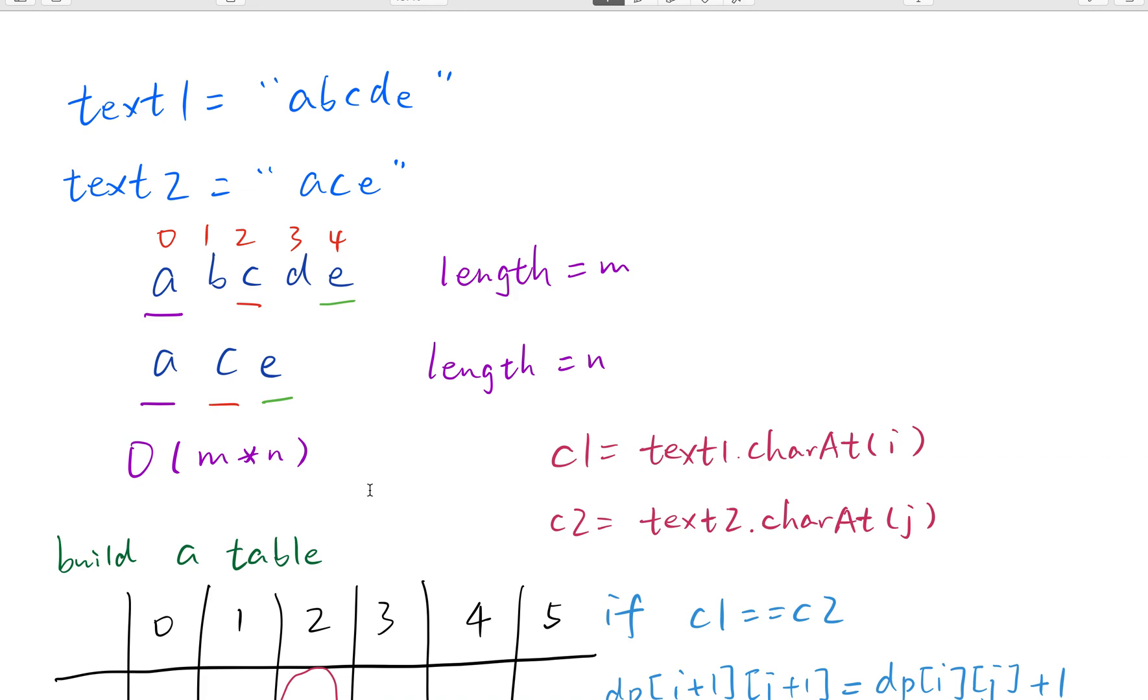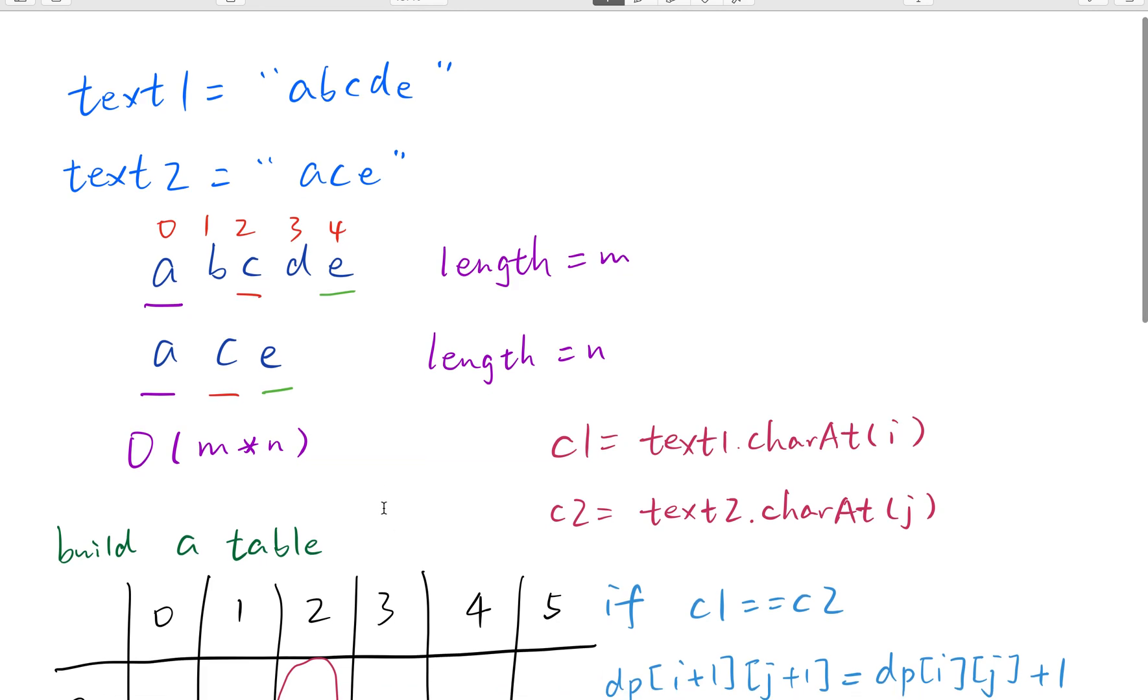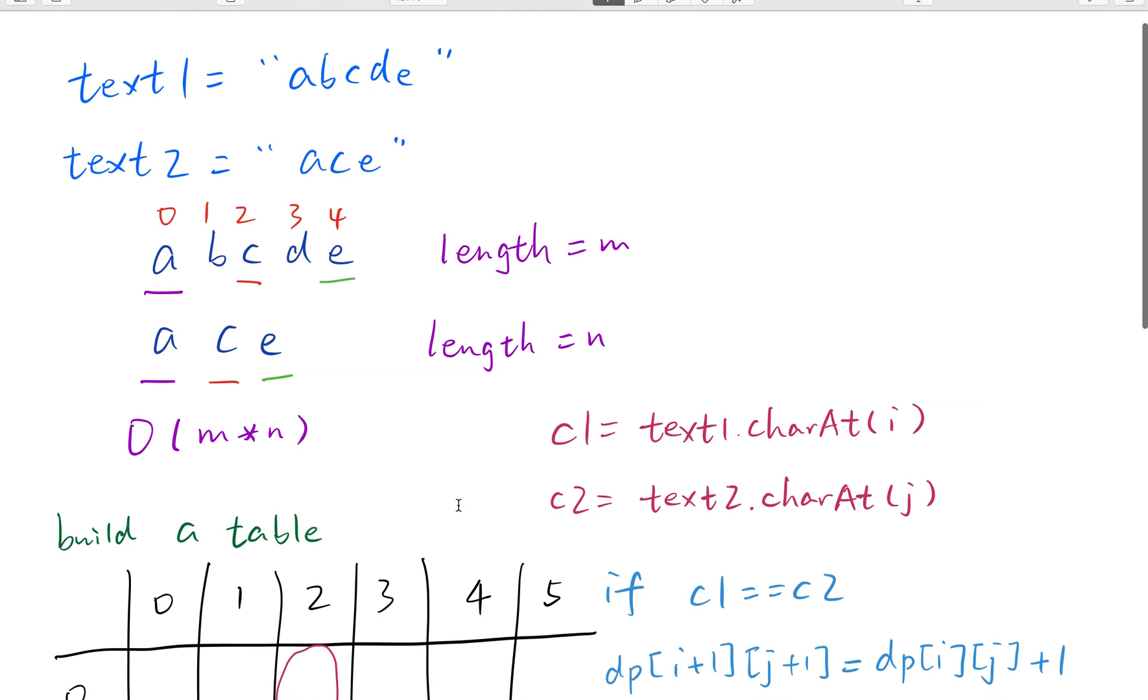We can build this table from the very beginning. We will build a DP array and its size will be M plus 1 times N plus 1. The reason that we use one more is that we do not need to check the index to see whether it is valid. Definitely you can initialize an array of size M times N, but if we make it one larger we do not need to check the index every time.